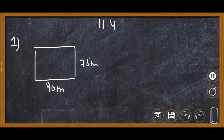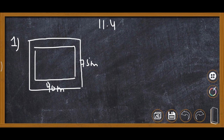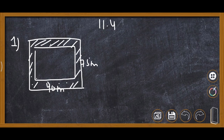A 5 meter wide path is built outside around it. This is the path — 5 meter broad — constructed all around it. We need to find the area of the path and the area of the garden in hectares.